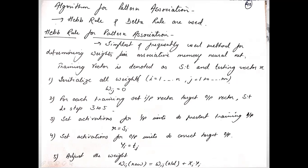The fifth step is weight adjustment. When we define the output, we match it and compute the error, then adjust the weights accordingly. The new weight W_ij is equal to the old W_ij plus X_i times Y_i, that is the pair. This algorithm is best understood by implementing it through a numerical example.